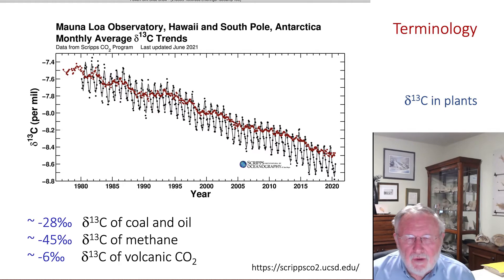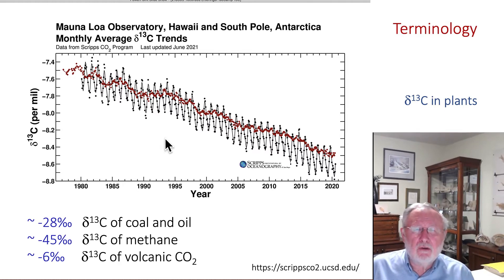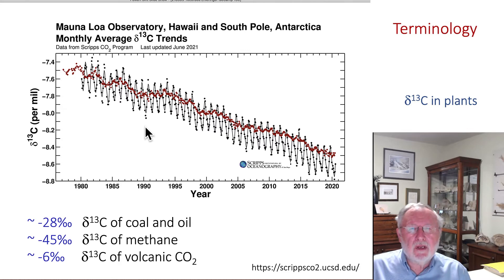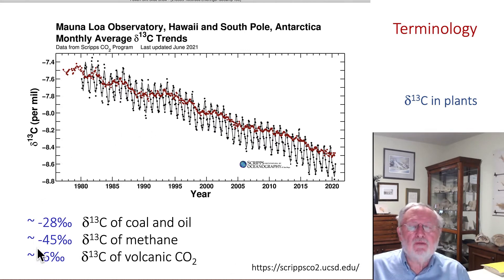Now, some of the climate change deniers might suggest that the increases in atmospheric CO2 are not associated with fossil fuel burning — instead, it's associated with volcanoes. Well, isotope data do not support that, because the carbon isotope ratio of CO2 from volcanoes is minus 6 per mil. Had the increase in CO2 been associated with volcanoes, we'd see an increasing trajectory, not a decreasing trajectory.